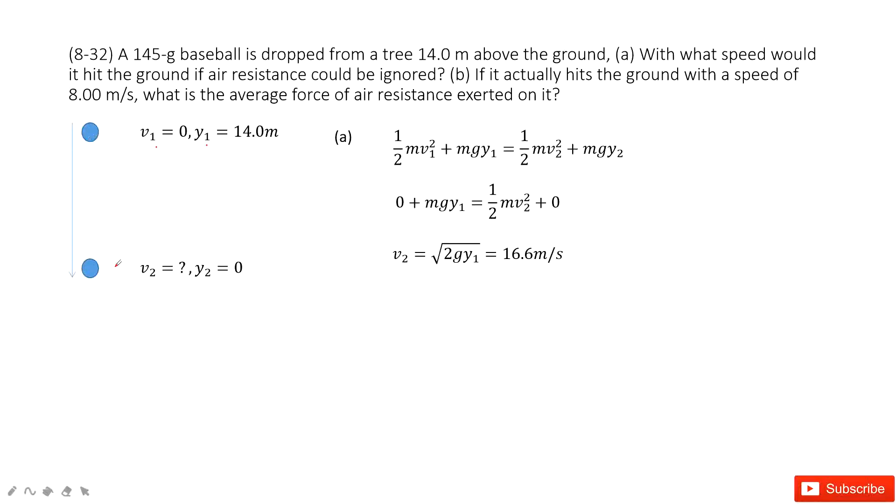And then in the fall down, when it reaches position 2, the velocity we don't know but the position is 0. So we need to use the conservation of energy to find this velocity V2.